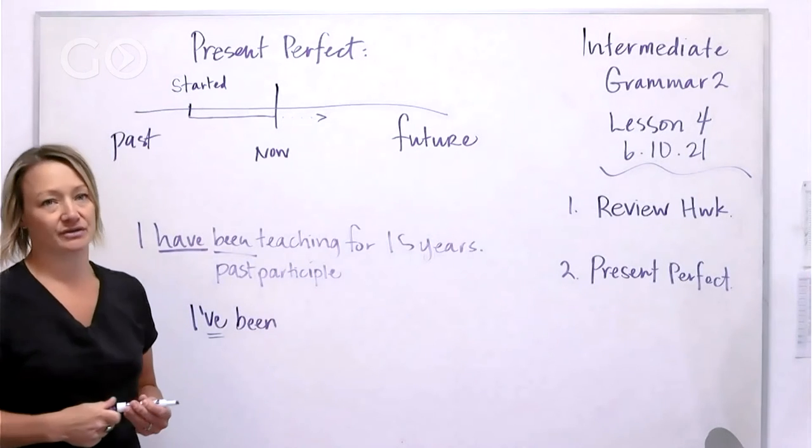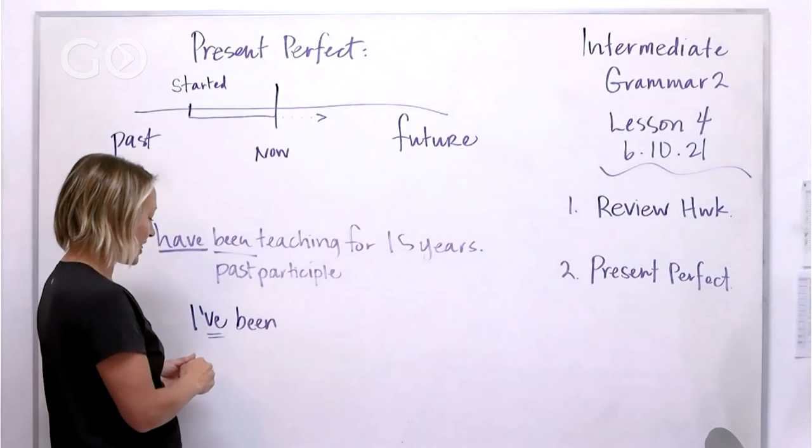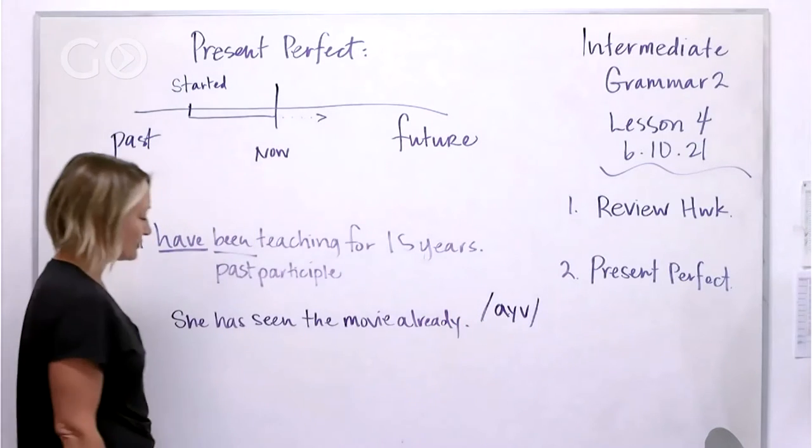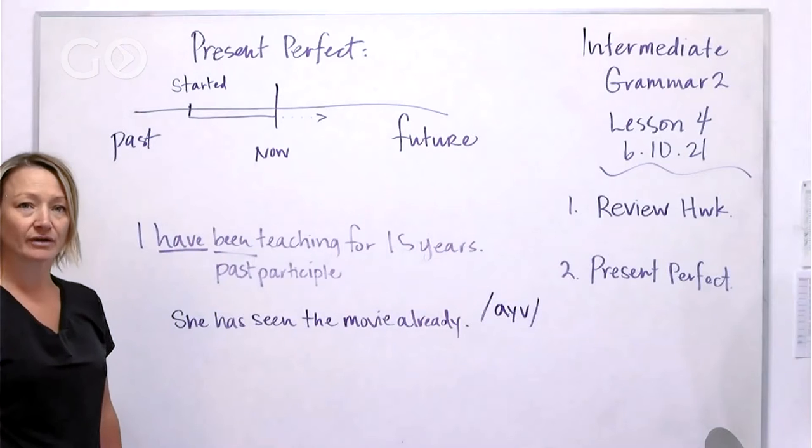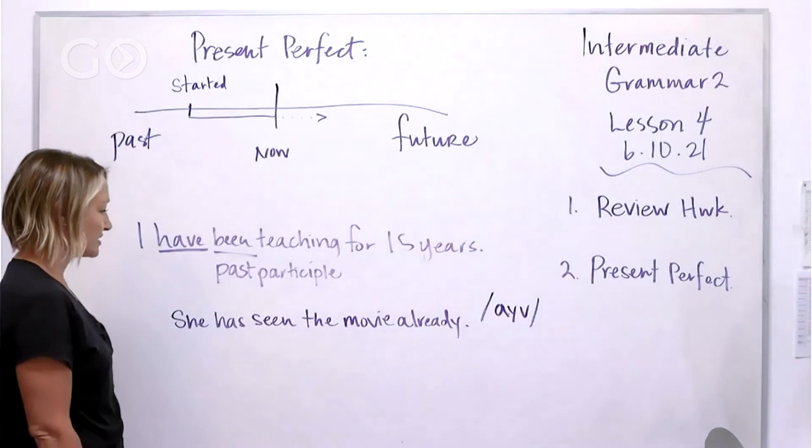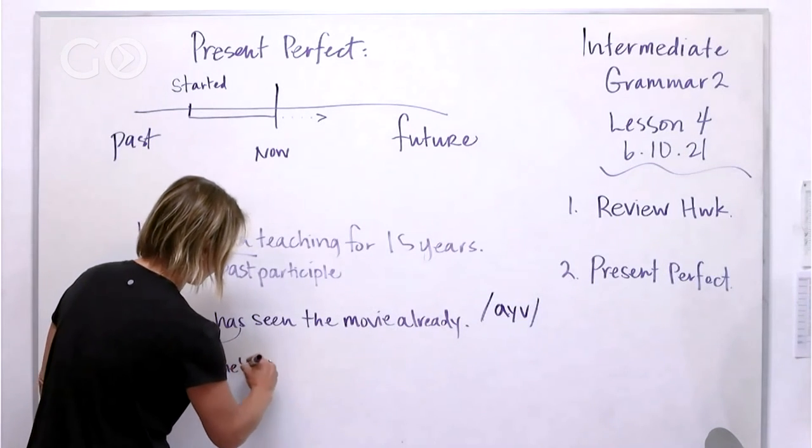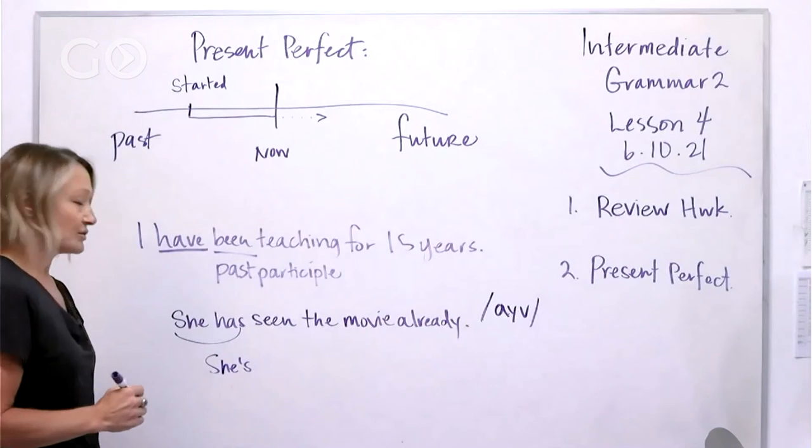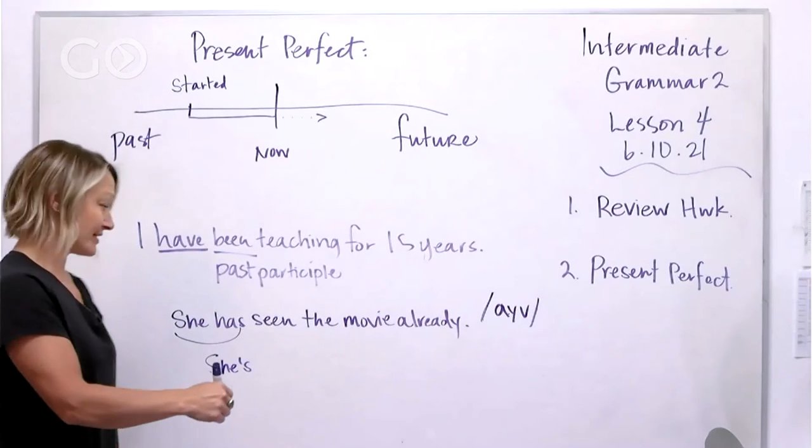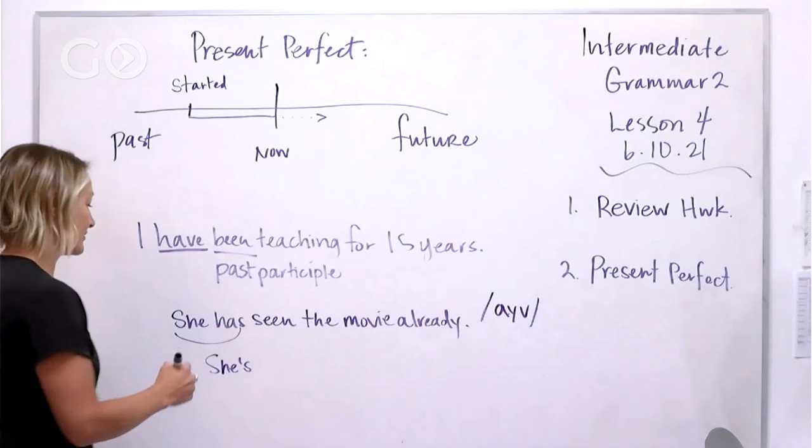Here's another example: 'She has seen the movie already.' 'She's seen the movie already.' If we contract that like we use with other tenses as well, so it's not 'she is,' it's 'she has.'